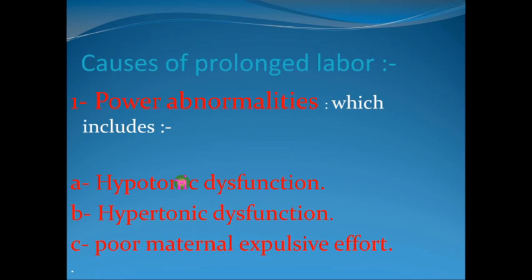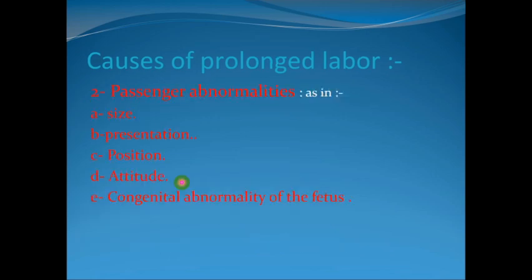The third type of power abnormality is poor maternal expulsive effort. This causes prolongation in the second stage of labor because if the patient has no effort to push and expel the fetus, it will prolong the second stage. This is usually due to the use of epidural analgesia or anesthesia, or occurs in patients with chronic debilitating illness who have no desire to push down.